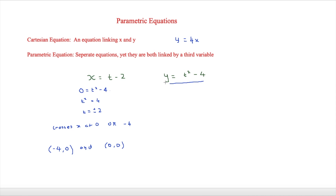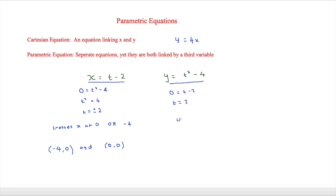To find the y-coordinates, we know it crosses the y-axis when x is equal to 0. So we set 0 equal to t minus 2, giving t equals 2. Substituting back, y equals 2 squared minus 4 equals 4 minus 4, so y equals 0. Therefore it crosses the y-axis at the origin, (0, 0).